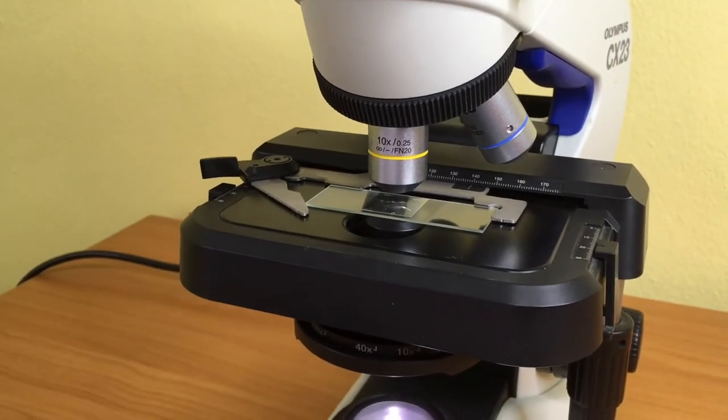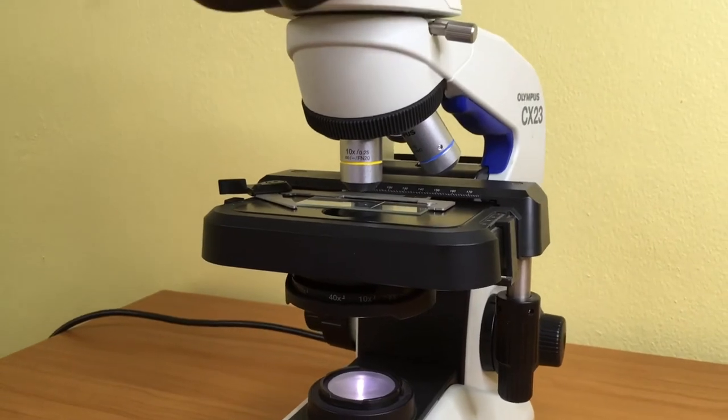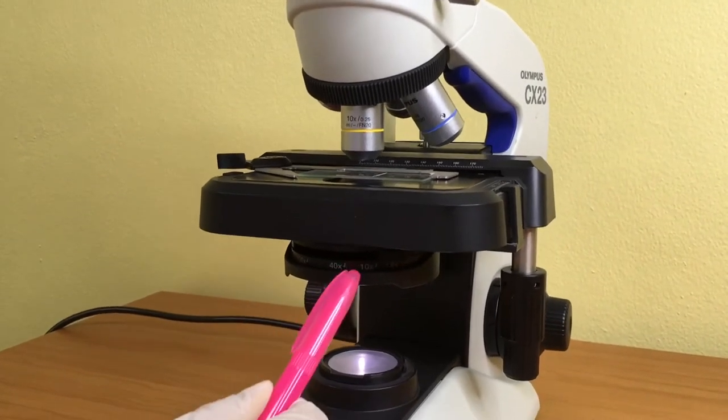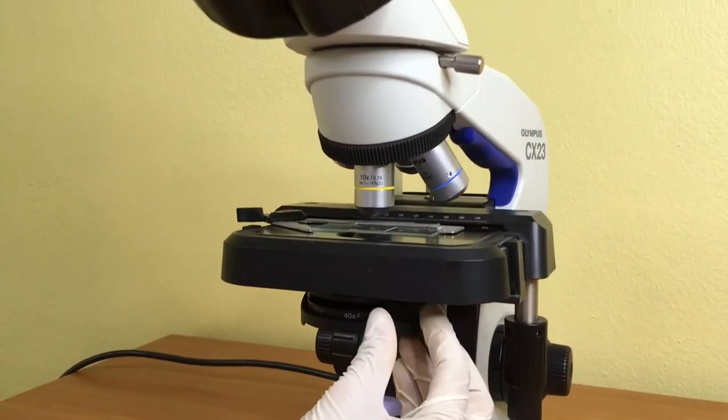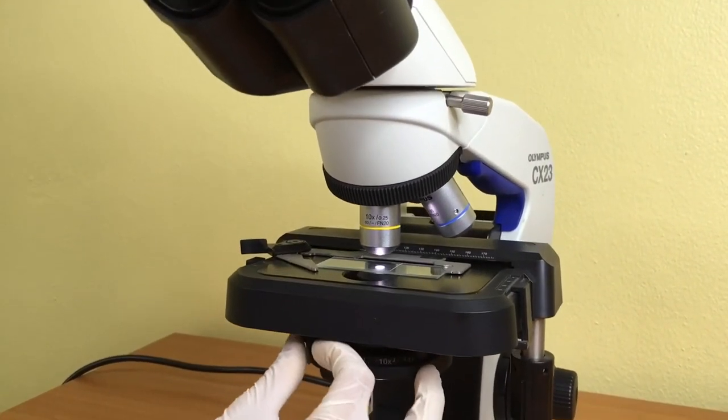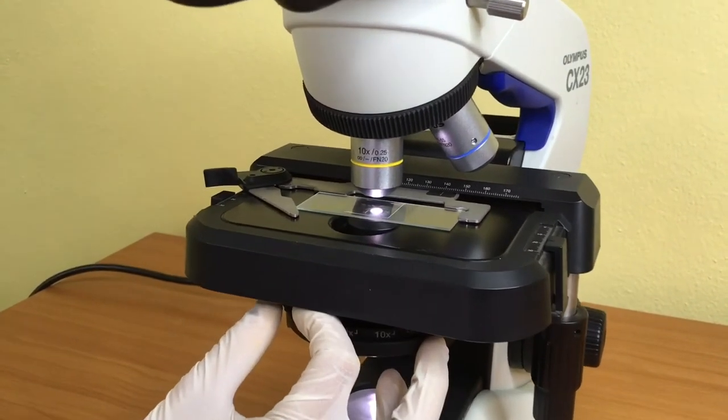Sometimes the image is unclear because it is too bright or too dark. You may adjust the iris diaphragm. The iris diaphragm is a light controller device used for adjusting the amount of light that reaches the specimen.